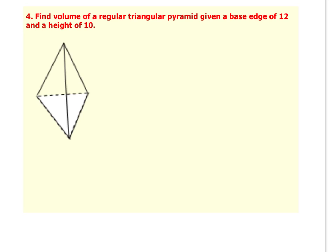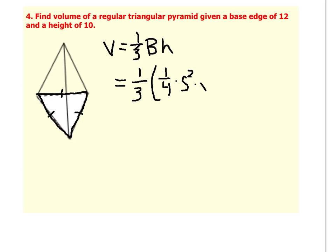Number 4 is a regular triangular pyramid. When it is a regular triangle, that means that it's equilateral. So when I do the volume for this pyramid, it's going to be 1 third times the area of the base times the height. And because this triangle is equilateral, I'm going to use my formula 1 fourth times s squared, the side squared, times root 3, times the height of the pyramid. And this turns into a fairly straightforward problem.